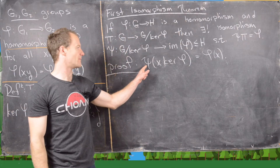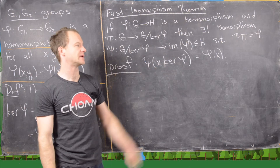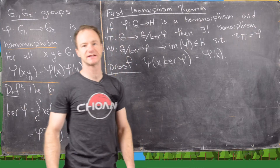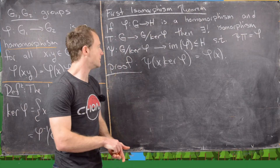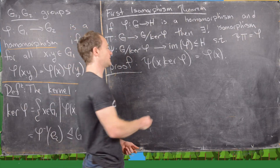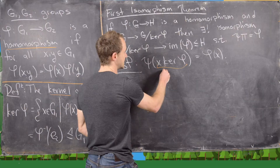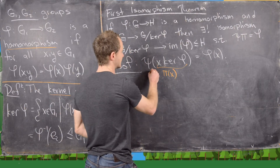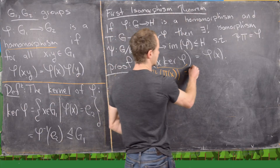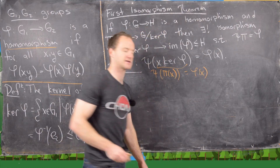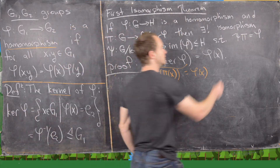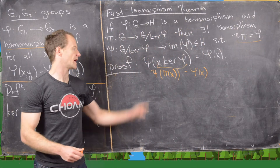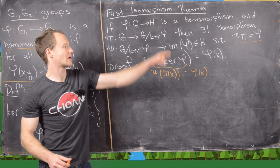Since psi takes x·ker(phi) to phi(x), and x·ker(phi) is exactly pi(x), we can rewrite this as psi(pi(x)) = phi(x), which proves the equation psi∘pi = phi.